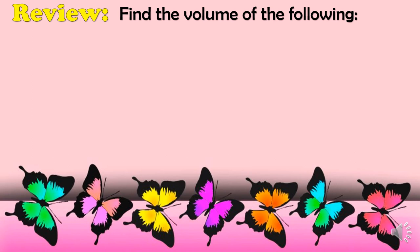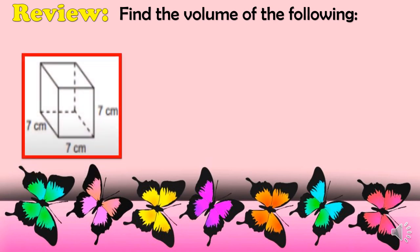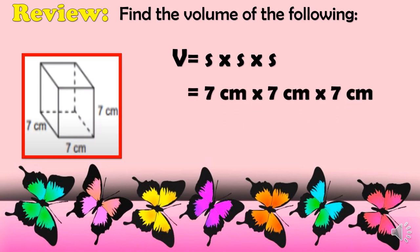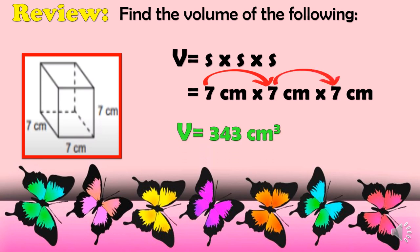For another cube example, we will use the formula V = S × S × S. Each side of the cube is 7 cm, so we multiply 7 × 7 × 7, which gives us a volume of 343 cm³.